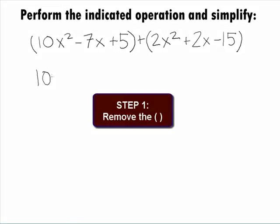When we do this step, we get 10x squared minus 7x plus 5 plus 2x squared plus 2x minus 15.